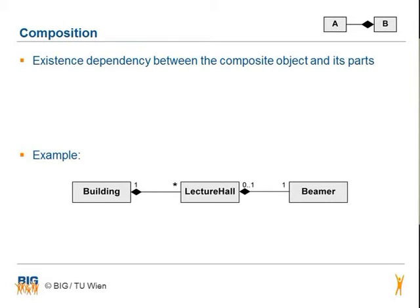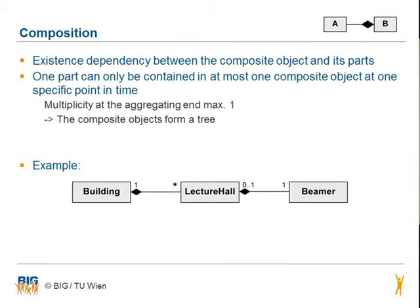The other type of aggregation is the composition. It shows that there exists a dependency between the composite object and its parts. One part can only be contained in at most one composite object at one specific point in time. The multiplicity at the aggregating end is maximal one. The composition objects form a tree.